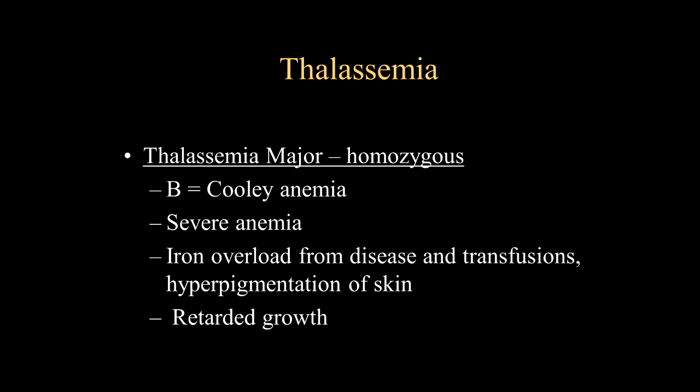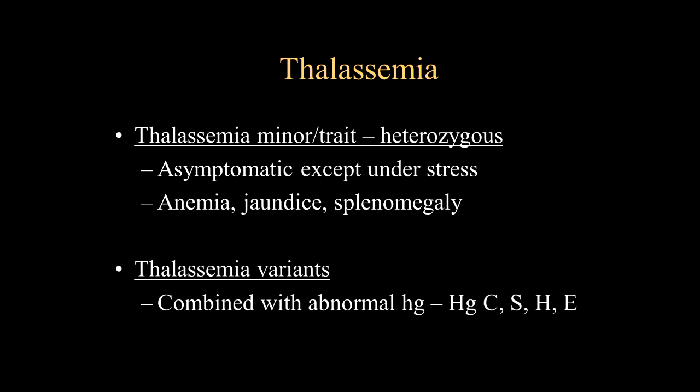With the destruction of the red blood cells, you're going to have iron overload. The treatment is also transfusions in these patients, and with that you're going to have iron load in the viscera, hyperpigmentation of the skin, and retarded growth patterns similar to sickle cell disease. The heterozygous version is called thalassemia minor or thalassemia trait. Typically these patients are asymptomatic, except when there are extremes of stress such as being cold, hot, or dehydrated — with that, they can develop anemia, jaundice, and splenomegaly. There are also heterozygous versions where you can have a combination of thalassemia with hemoglobin C, S, H, or E.